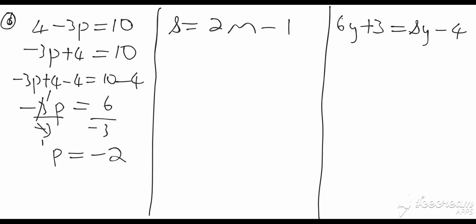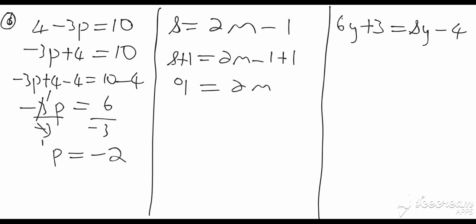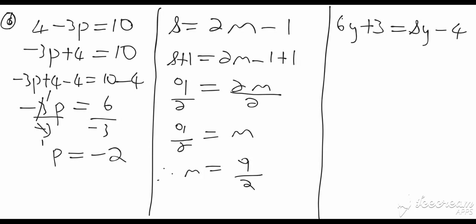For the second question: we can also have the unknown m on the right-hand side. We have eight equals two m minus one. We get rid of that minus one first by adding one to both sides: eight plus one equals two m minus one plus one. Nine equals two m. Since we have two m and want m, we divide both sides by two: nine over two equals m. So m equals nine over two, and we leave the answer as an improper fraction.